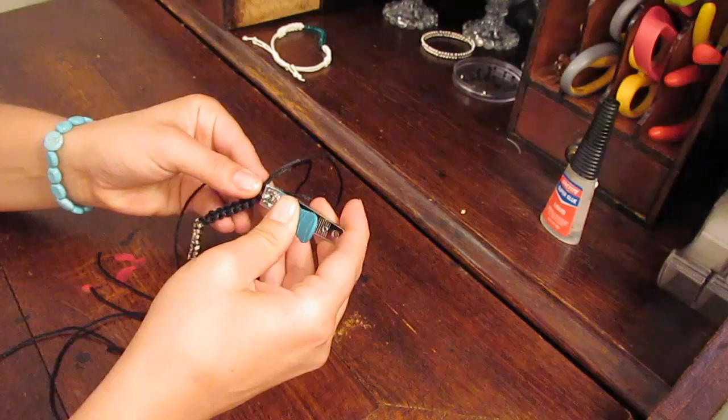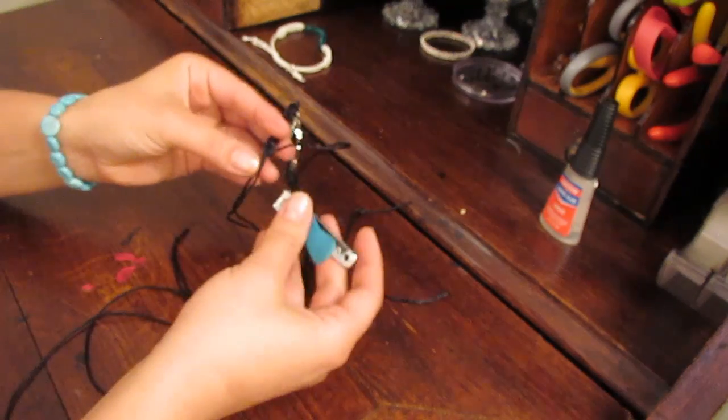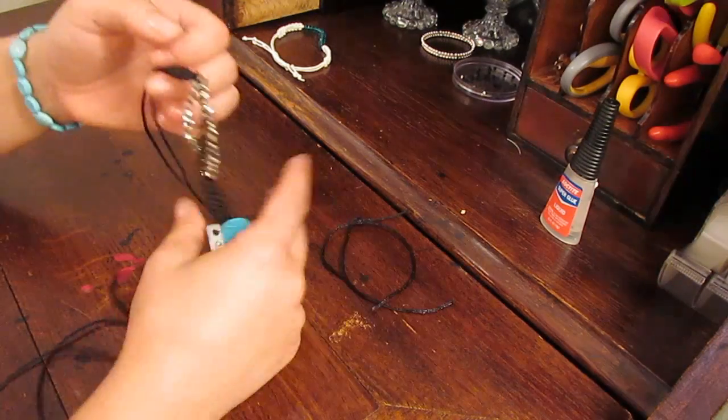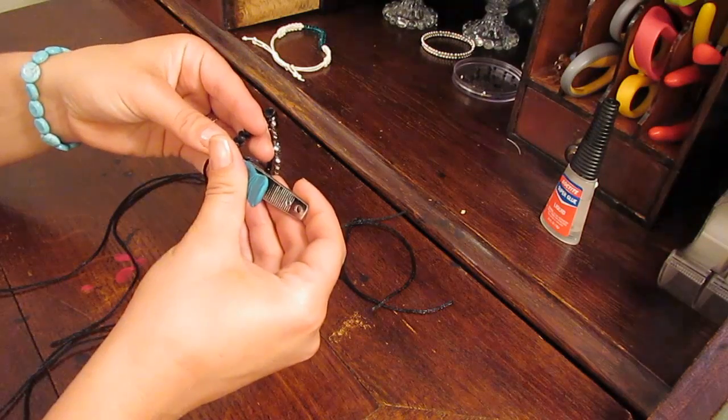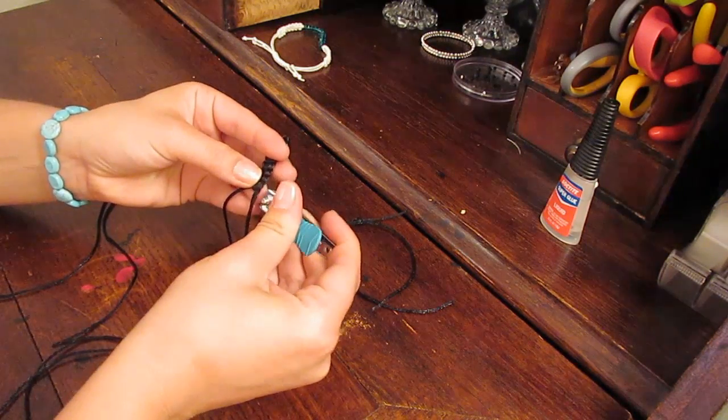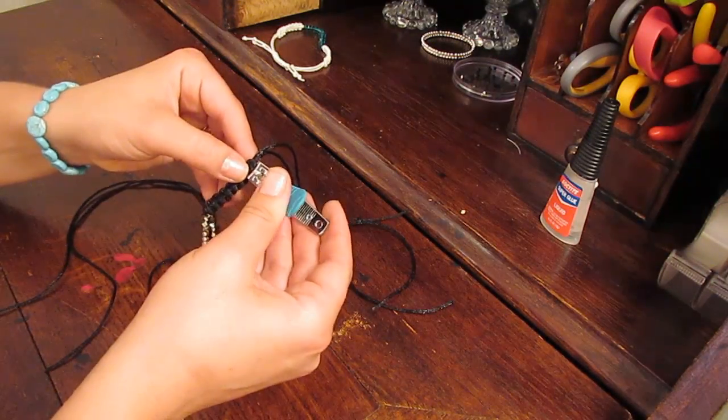Now I'm just going to clip off the two extra strings that were from our actual square knotting. And yes, I'm using toenail clippers or nail clippers. I find they are the easiest for my hands to work with. So I keep a couple pair in my crafting desk.